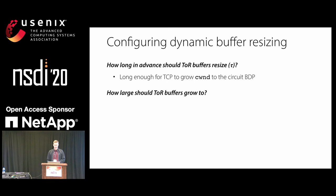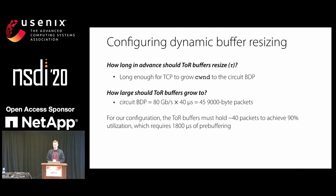In our experiments with an 80 gigabits-per-second circuit network and 40 microseconds one-way delay, this was approximately 45 9,000-byte packets. For our evaluation, we achieved 90% utilization with ToR buffers holding about 40 packets. We gave a little leeway and actually resized to 50 packets to ensure we fully achieved the target utilization.